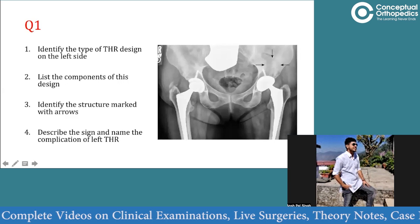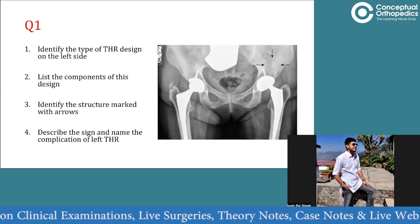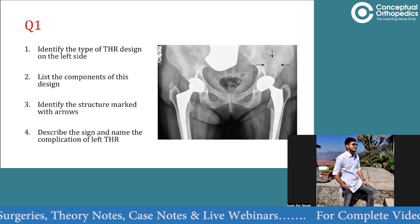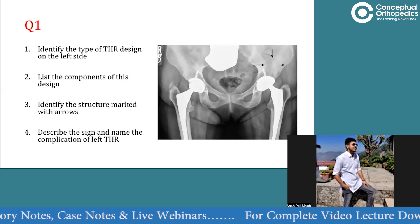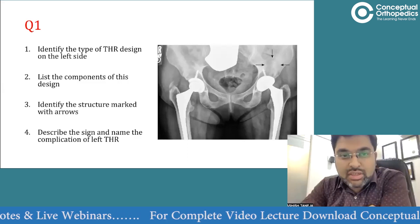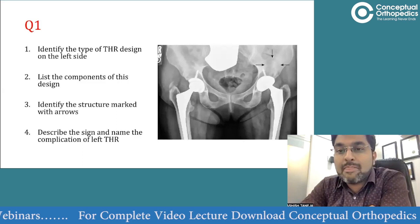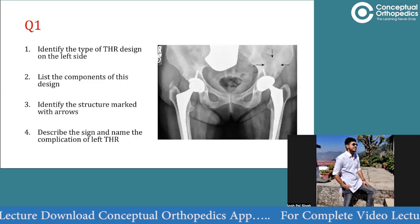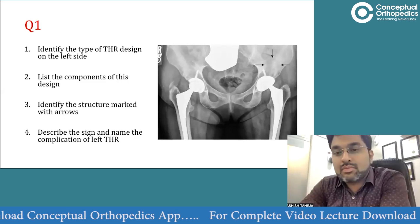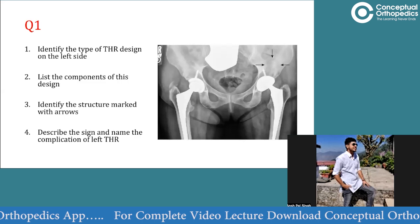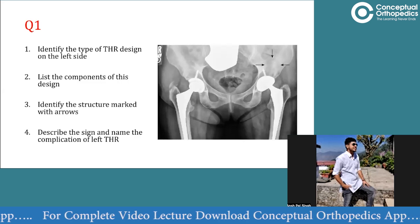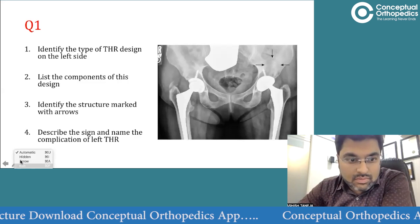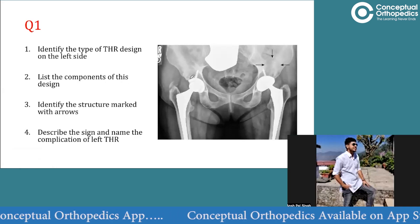Identify the structure marked with arrows, describe the sign, and name the complication of left THR. For the first question - type of THR design on the left side - it is an uncemented kind of implant. Can you go into further details? Which uncemented exactly? How is the right side different from the left? Look carefully at the insert, look at the shell - focus on the shell part.